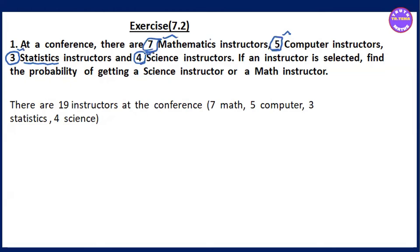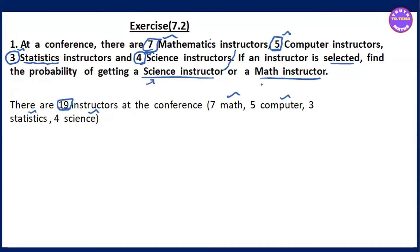There are 19 instructors in total: 7 math, 5 computer, 3 statistics, 4 science. If an instructor is selected at random, find the probability that it is a science instructor or a math instructor.